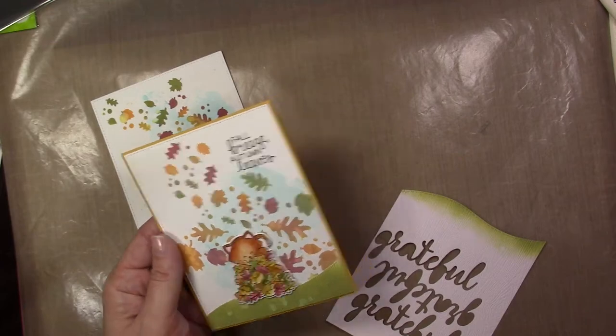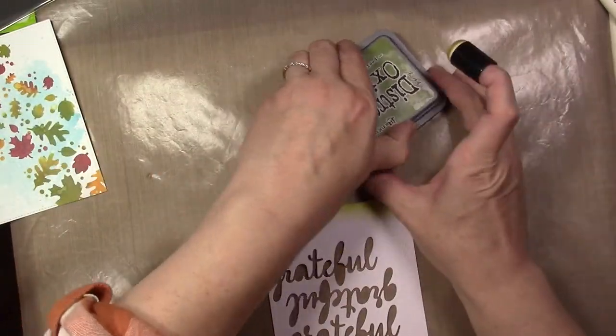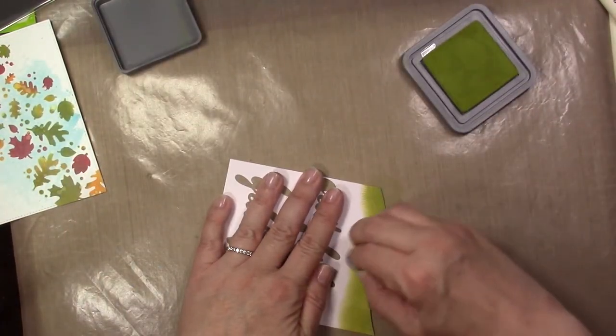I added some Peeled Paint Distress Oxide ink to it. This one here, my scrap I've already die cut it with that land border die so I'm just going to go ahead and reuse that extra piece. No sense in wasting your extras on your desk.